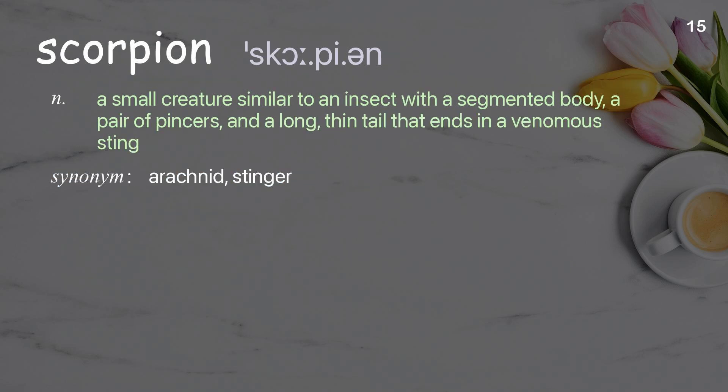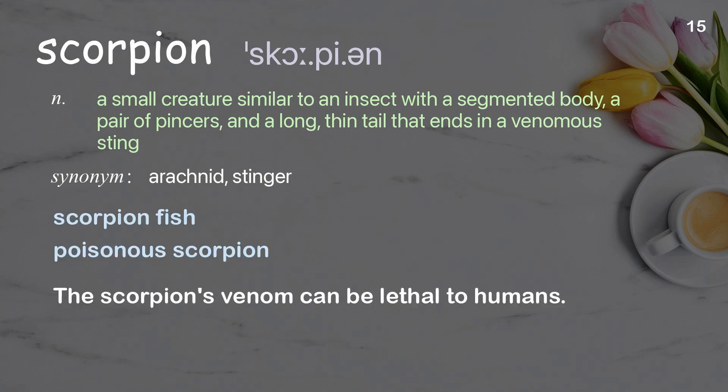Scorpion: a small creature similar to an insect with a segmented body, a pair of pincers, and a long, thin tail that ends in a venomous sting. Examples: scorpion fish, poisonous scorpion. The scorpion's venom can be lethal to humans.